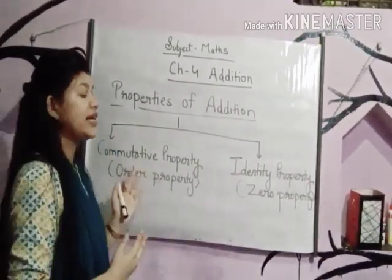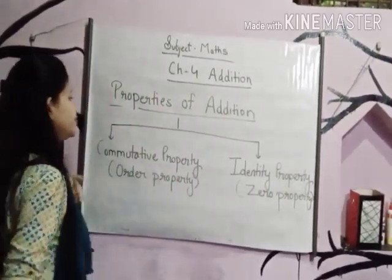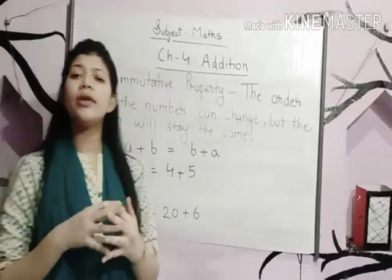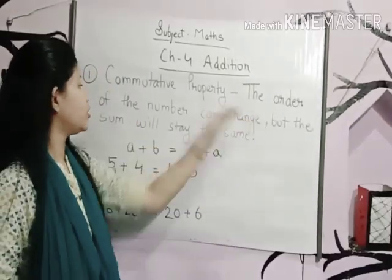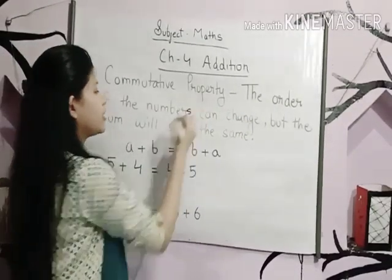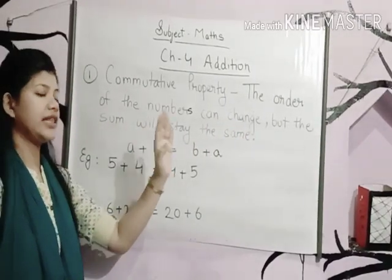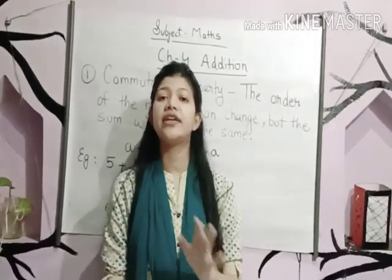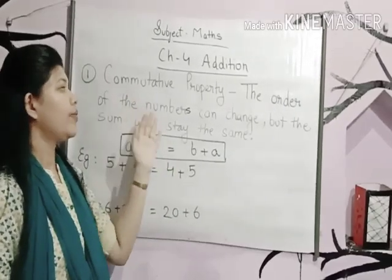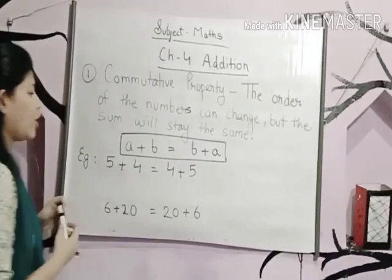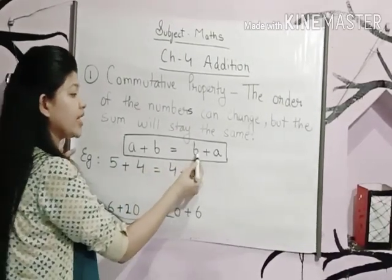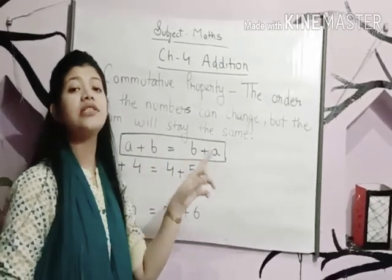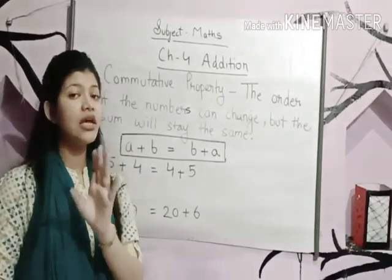Now let's learn what comes under the commutative property or order property. Let's discuss these properties one by one. Commutative property — what do you mean by commutative property? The order of the numbers can change but the sum will stay the same. This means if the order changes, it will not affect the sum. The formula used is: a plus b is equal to b plus a.